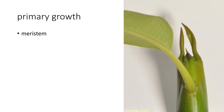Over here you can see the meristem of a plant, and this is a rather large plant. You can see where the leaves are starting to form — they start out small, they get larger, and eventually they become much much larger in format.